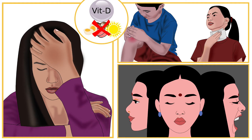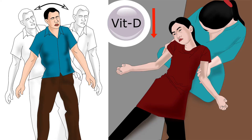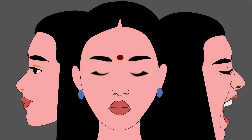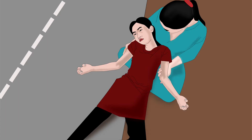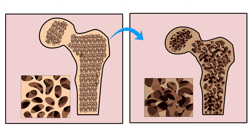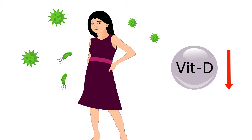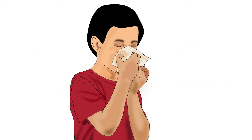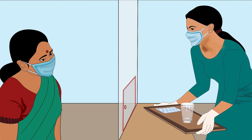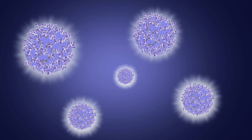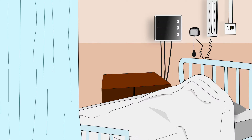Let us understand the effects of vitamin D deficiency. Signs may vary with severity and age group. General signs include fatigue, mood swings, and poor immunity. Muscle cramps, spasms, and seizures are also seen. Without adequate vitamin D, bones become thin, soft, and brittle. Low vitamin D impairs the immune system, increasing the chance of catching infections and raising inflammation in the body. This makes a person more susceptible to COVID-19, and the severity of COVID-19 and death due to it rises with deficiency.